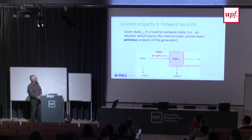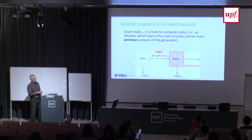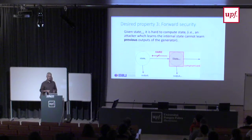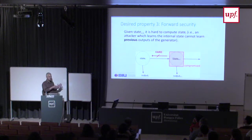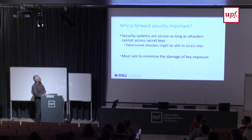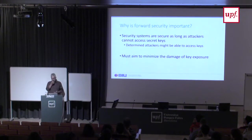The inverse property is forward security: given the state at time i+1, it's hard to compute any previous state. What we showed in our attacks was that at the time, the generators of both Linux and Windows didn't have forward security. So if you could break into the system right now, you could learn all previous states and previous outputs — all keys that were used to connect to services on the internet in the past, and also future ones until the next refresh.